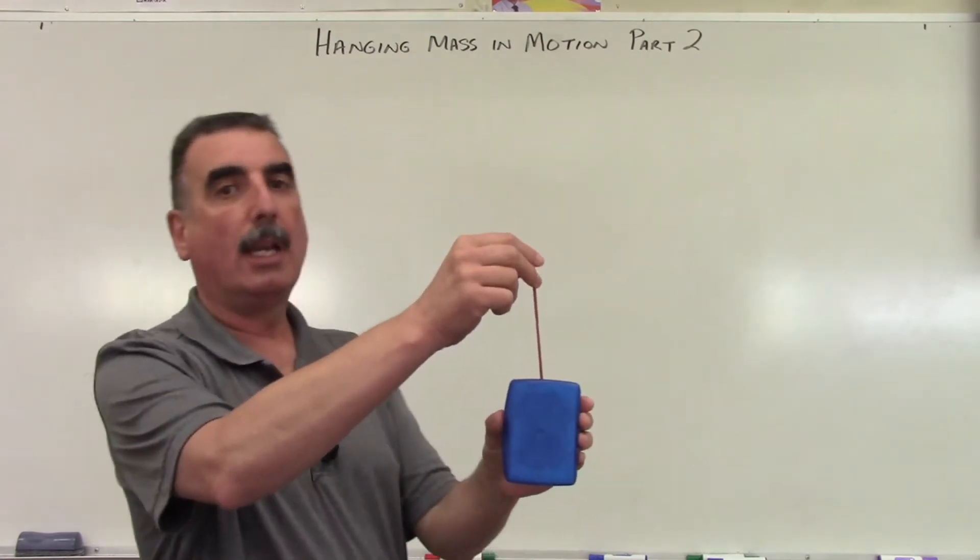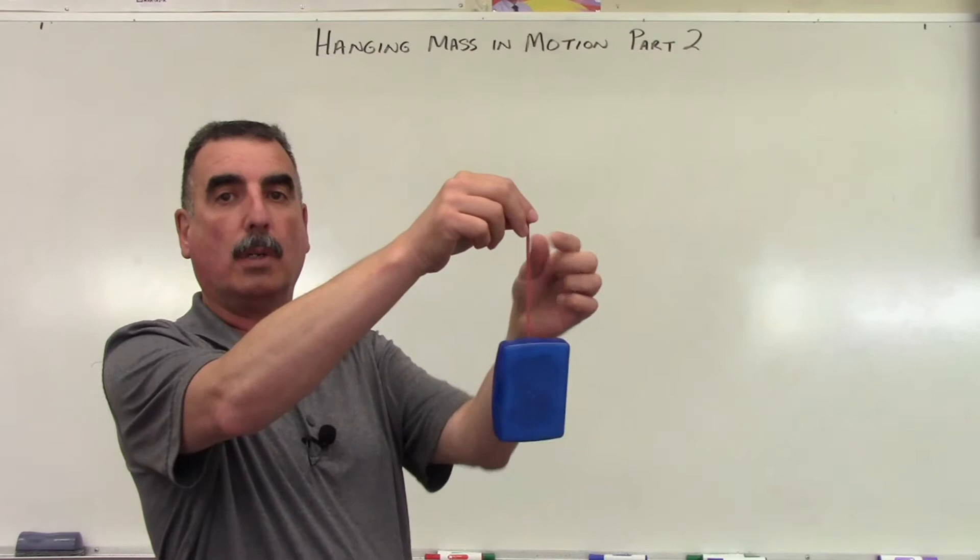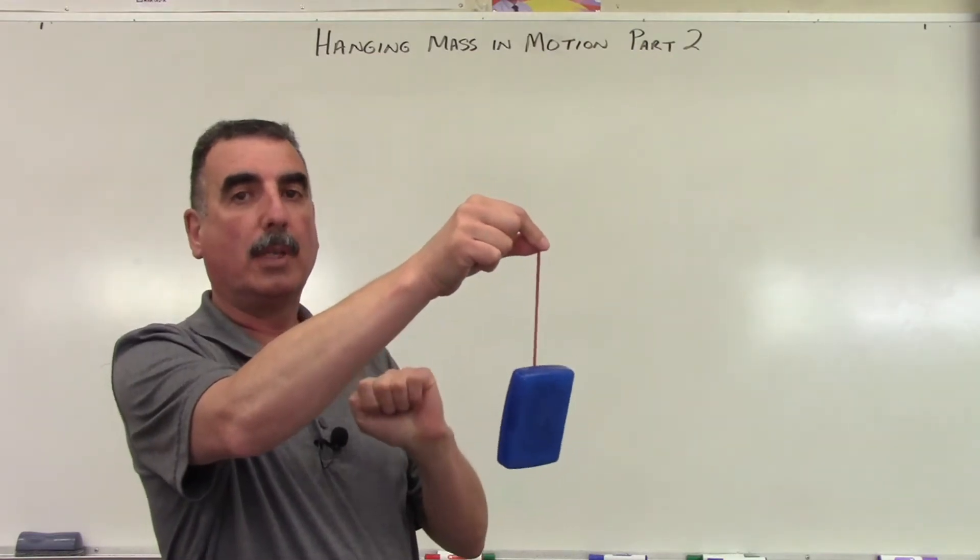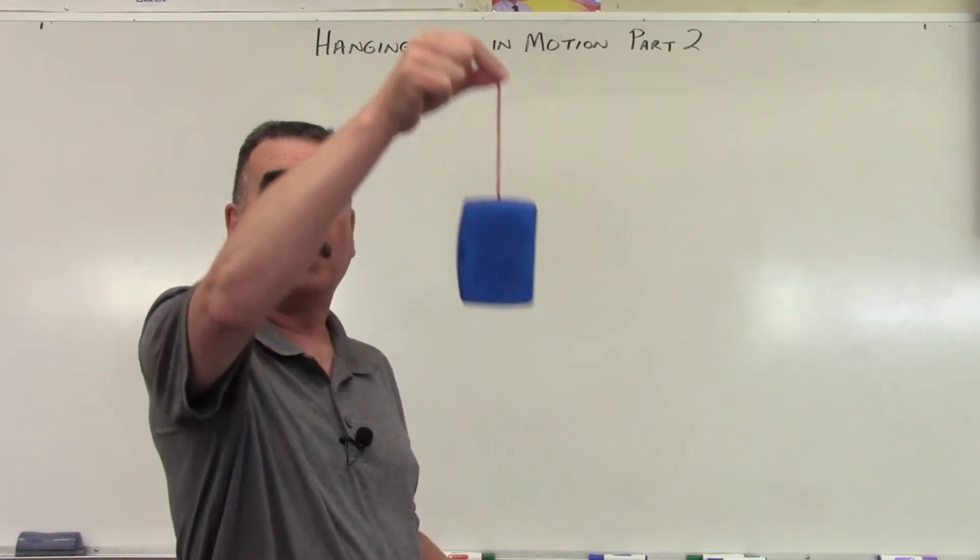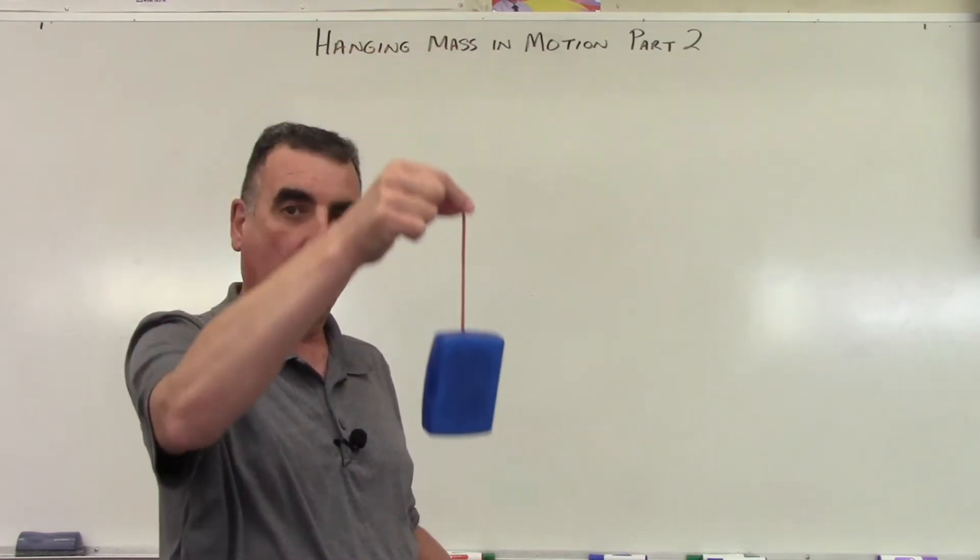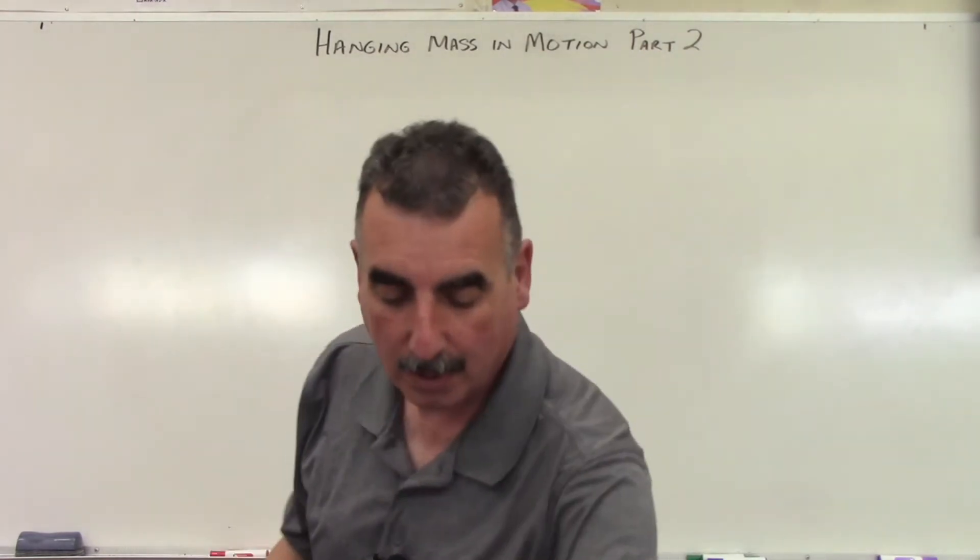What we're going to be looking at is a hanging mass and the tension on that cord. What we want to know is what happens or what's the effect on that tension as an object moves upward and as it moves downward. What effects are occurring. So let's look at the math of this.